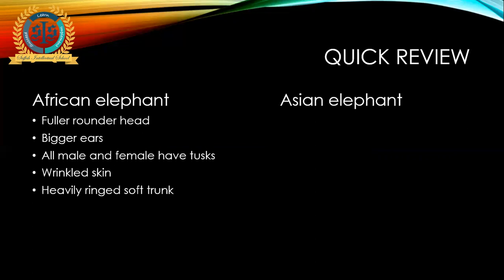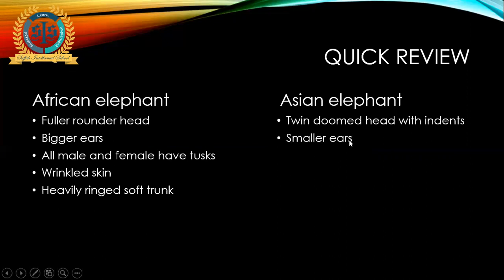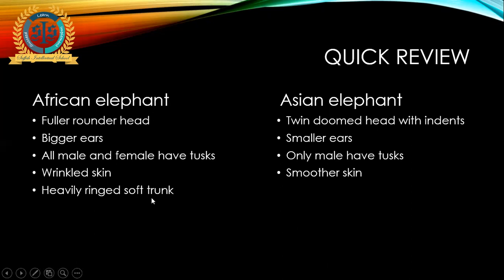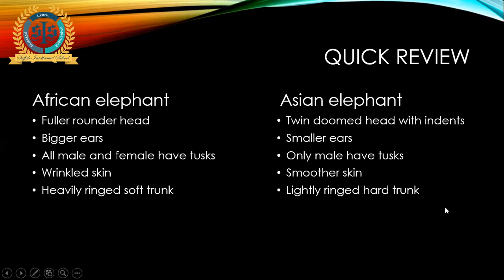Asian elephants have a twin domed head with indents, smaller ears, only males have tusks, smoother skin, and a lightly wrinkled hard trunk. So basically they have only a structural difference and otherwise they are both elephants.